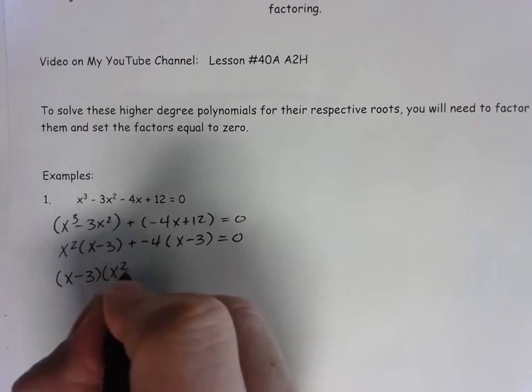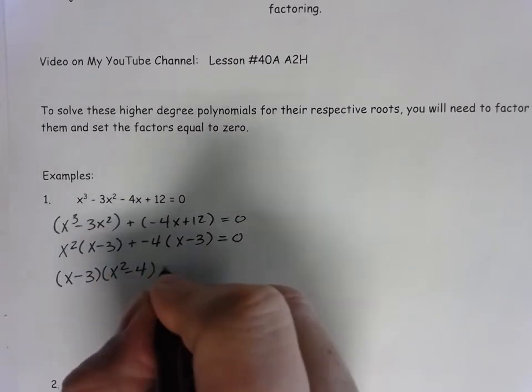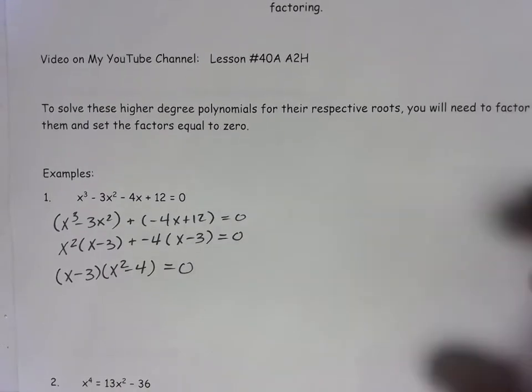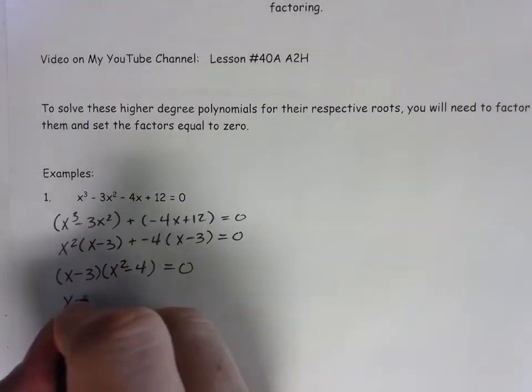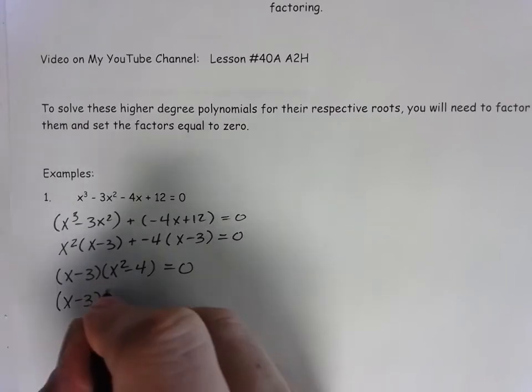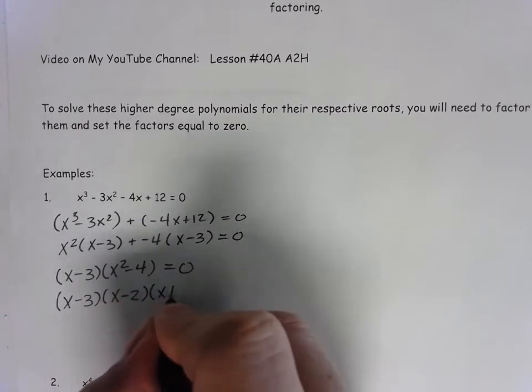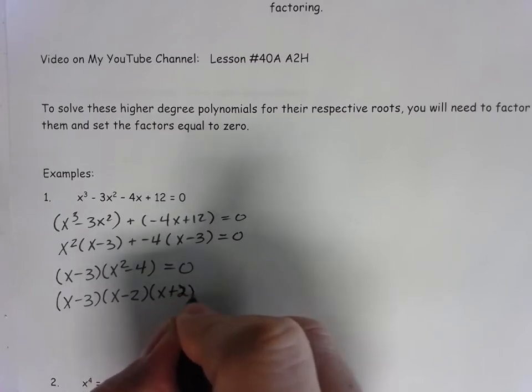x squared minus 4, of course equal to 0. Now we're not done with the factoring, as we have to now break up that into x minus 3, x minus 2, x plus 2, equals 0.